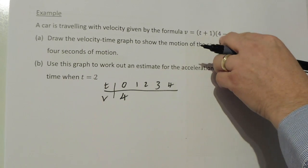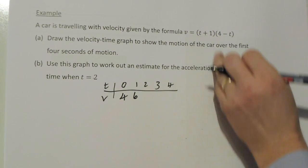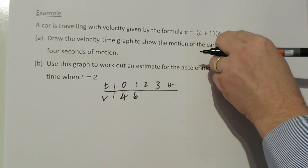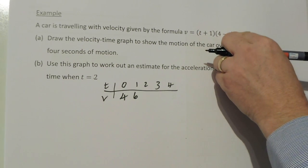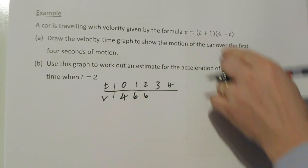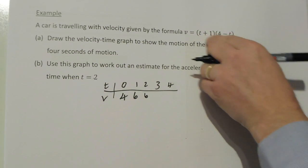If I put t=2: 2+1 is 3, 4-2 is 2, and 3×2 is 6 again.